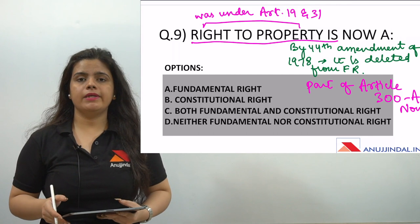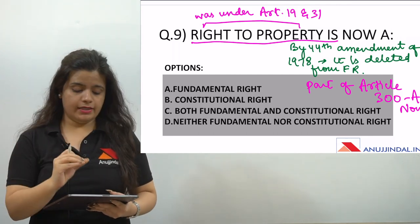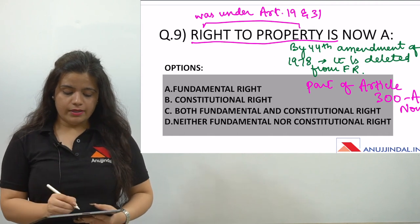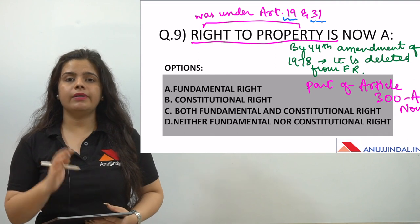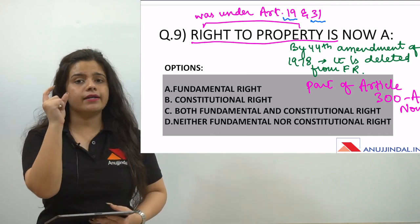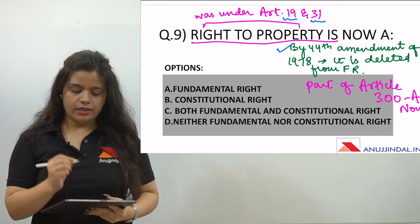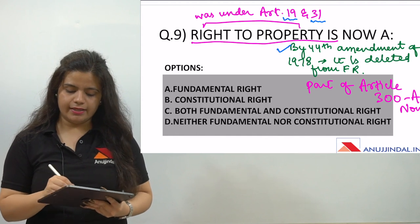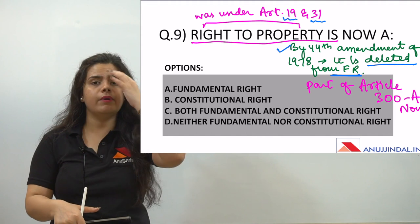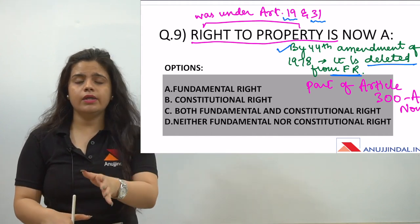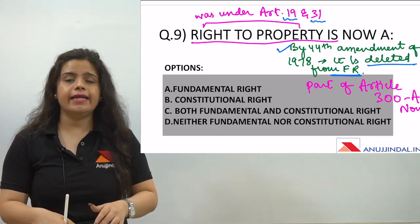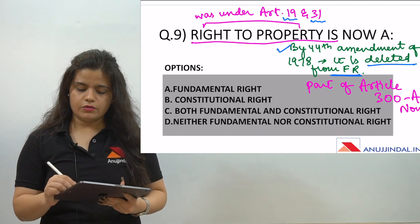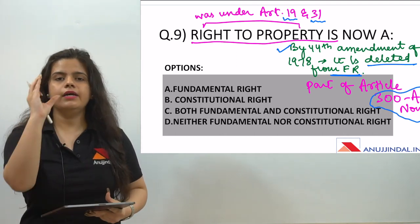Question number 9 is about the Right to Property — what is it now and under which article? Let's look at the background. Right to Property was originally under Article 19 and Article 31 as a fundamental right. Then, by the 44th Amendment, Article 31 was deleted from the fundamental rights. So originally it was under Article 19 and Article 31, but the 44th Amendment of 1978 deleted it from fundamental rights. Now it comes under Article 300A.